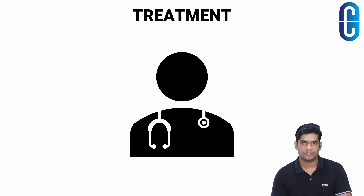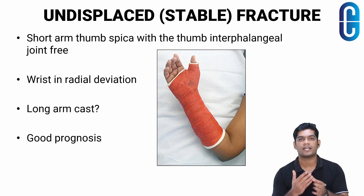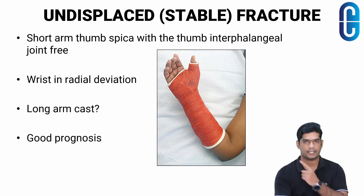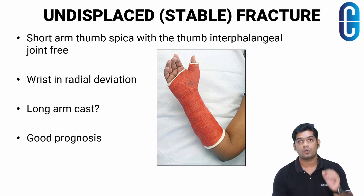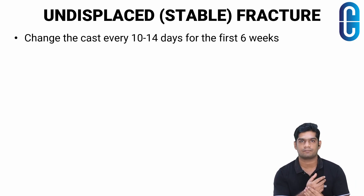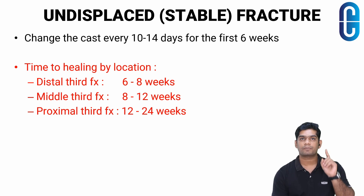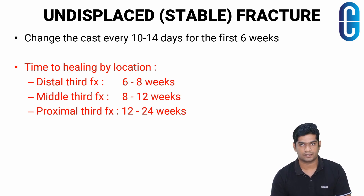For an undisplaced stable fracture, the current recommendation is a short-term thumb spica with the thumb interphalangeal joint free and the wrist placed in radial deviation. A long arm cast is recommended for non-displaced proximal pole fractures. Prognosis is excellent in undisplaced stable fractures. Consider changing the cast every 10 to 14 days for the first six weeks. A distal third fracture heals in 6 to 8 weeks, middle third in 8 to 12 weeks, and proximal third takes 12 to 24 weeks. Removal of cast should not occur until union has been documented on CT.